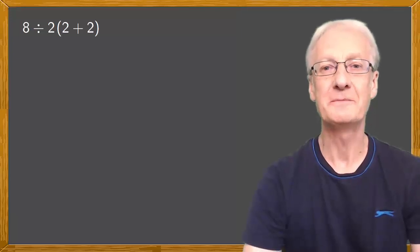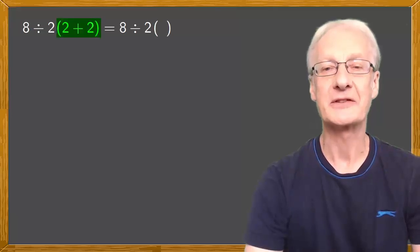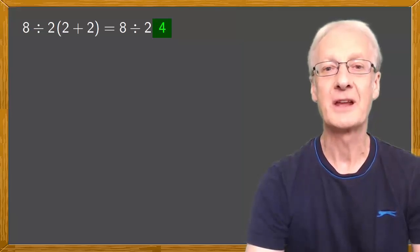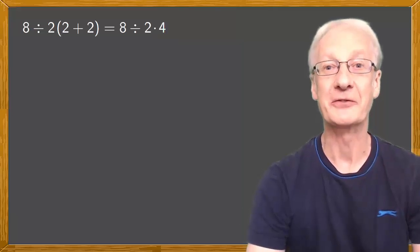So here's the problem. It's 8 divided by 2 times in parentheses 2 plus 2, which we can replace by 4. Now we can remove the parentheses, and although there was no sign in front, we know it's a multiplication, so we can put a times sign in. Great. Everyone agrees so far.